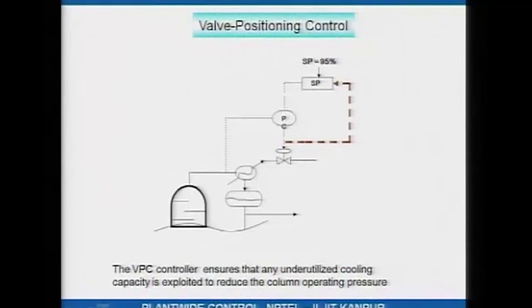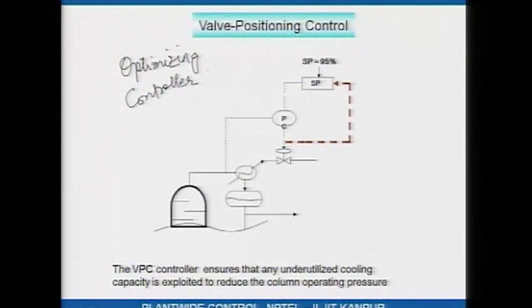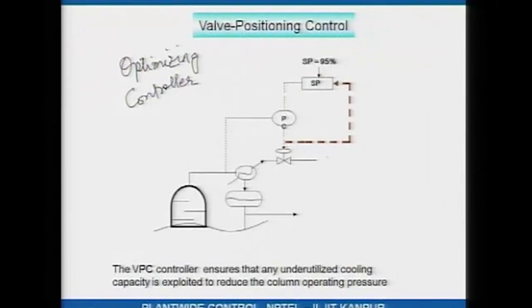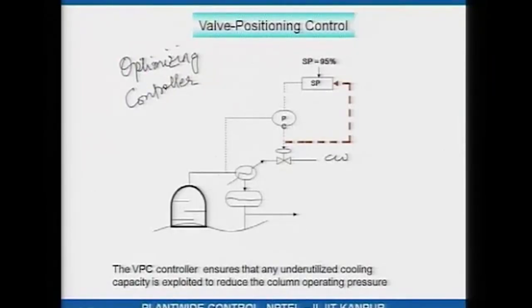Another very useful control structure is called the valve positioning controller, sometimes also referred to as an optimizing controller or optimizing control. What it does is best explained using an example. Ordinarily in distillation columns, the hot vapour is condensed in the condenser using cooling water. If the pressure of the column is increasing, that means more vapour needs to be condensed, so you increase the cooling water flow, condensation rate goes up, and the pressure gets back down. This is how ordinarily pressure is controlled in most industrial columns.